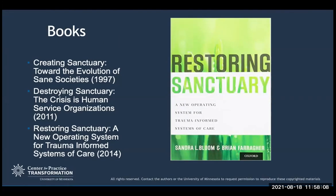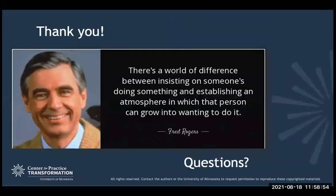There are three books if you want to study this further. I would recommend reading Restoring Sanctuary, which is the last of the trilogy. Creating Sanctuary covers how this model got started and the history of therapeutic communities. Destroying Sanctuary reflects on the crisis in human service organizations that began with managed care and over-stressed organizations. Restoring Sanctuary goes into greater detail about the seven Sanctuary commitments and how they work for an organization. I'm open to questions and comments.